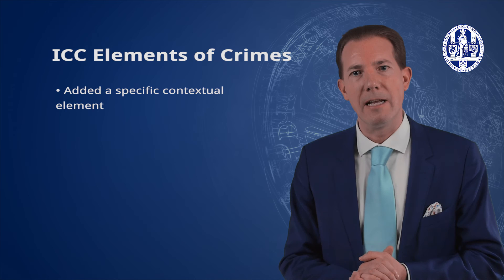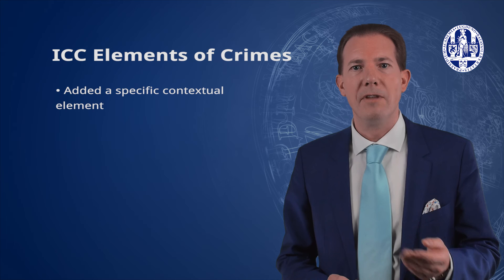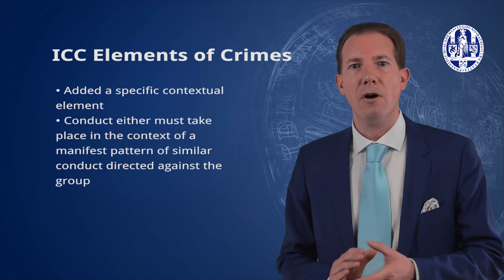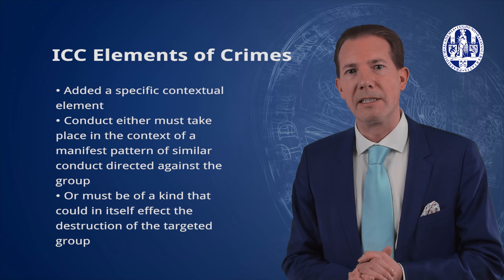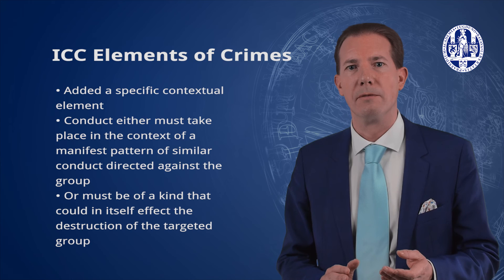The ICC elements of crime have added a specific contextual element to genocide that is not in the Genocide Convention. They clarify that the conduct must either take place in the context of a manifest pattern of similar conduct directed against the group, or be of a kind that could in itself affect the destruction of the targeted group. In the case against Sudanese President Omar al-Bashir, this criterion was used to argue that genocide exists only when the threat against the existence of the targeted group becomes concrete and real, as opposed to just being latent or hypothetical. But this reading as a concrete threat-based crime contrasts with the ambition to prevent even emerging patterns of genocide, and is therefore disputed.